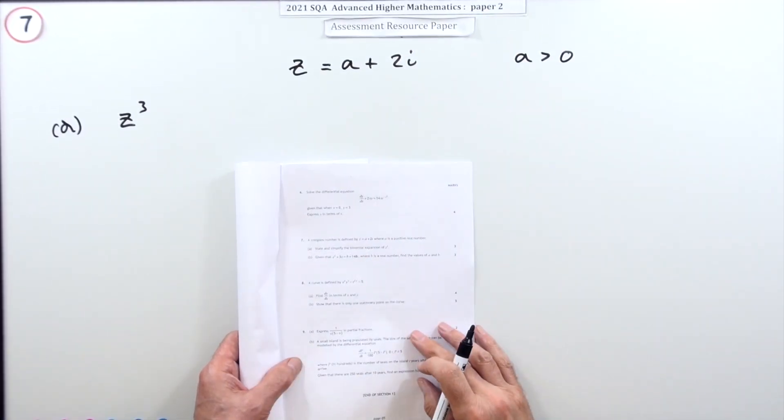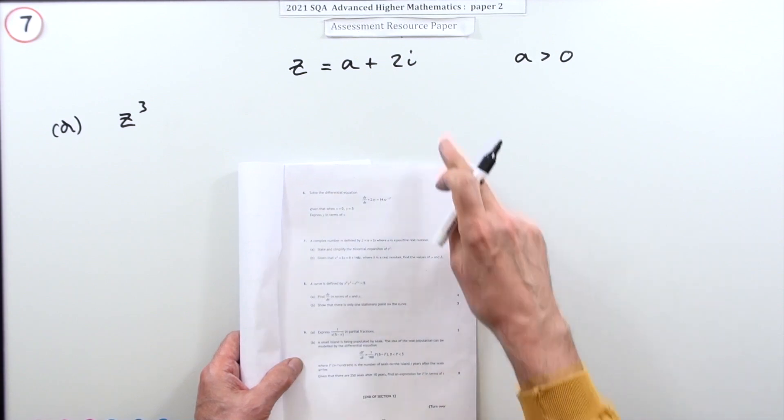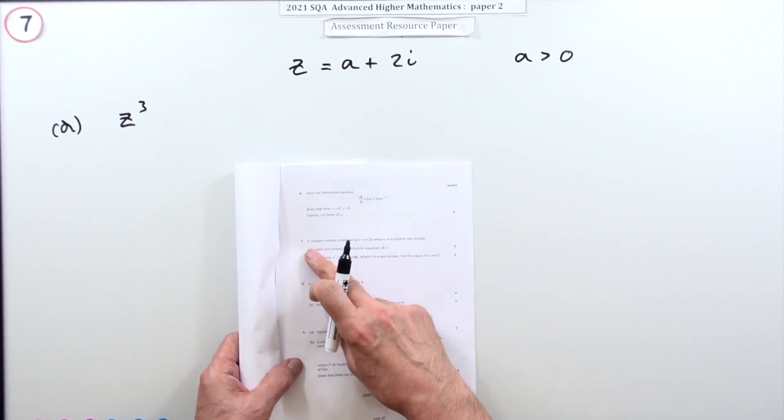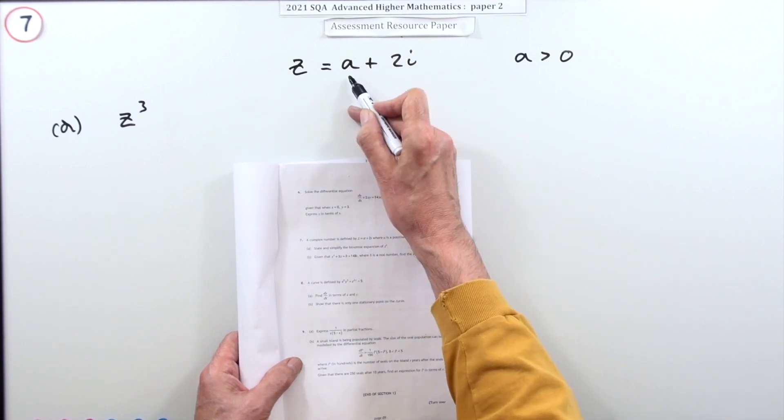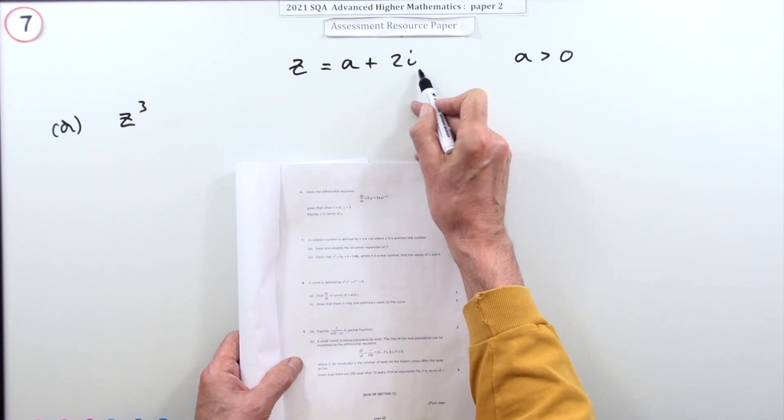Number seven from paper two, the 2021 advanced higher maths resource paper, six marks, complex numbers. A complex number is given by z equals a plus 2i, where a is some unknown positive number.